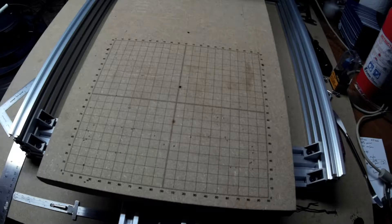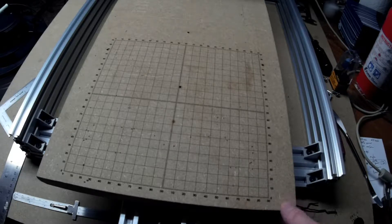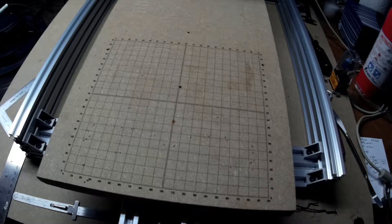So before I did that, I wanted to check and make sure everything was calibrated and square. I had burned this laser etched grid on here, it's 200 by 200.